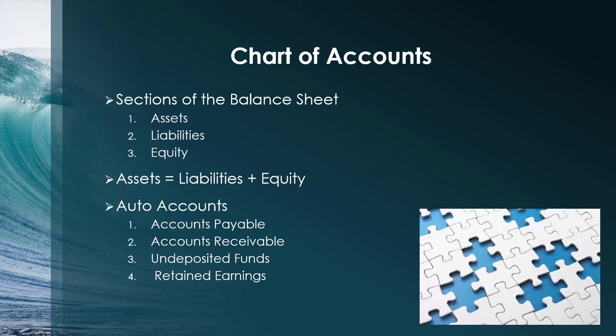Just like the profit and loss statement, the balance sheet has three different sections: assets, liabilities, and equity. The accounting equation states that assets always equal liabilities plus equity. There are a few auto accounts in QuickBooks Online — I bring these up because these accounts will not need to be uploaded as they are created behind the scenes. When we do other activities, the amounts will automatically feed to these accounts. I'll explain these in more detail when I illustrate the structure of the balance sheet.